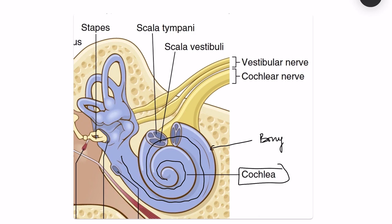A labyrinth is anything which is very difficult to navigate. This is the bony labyrinth, and inside this bony labyrinth there is a membranous labyrinth. The outer walls form the bony labyrinth, and inside we have membranes which divide the space into scala vestibuli and scala tympani.